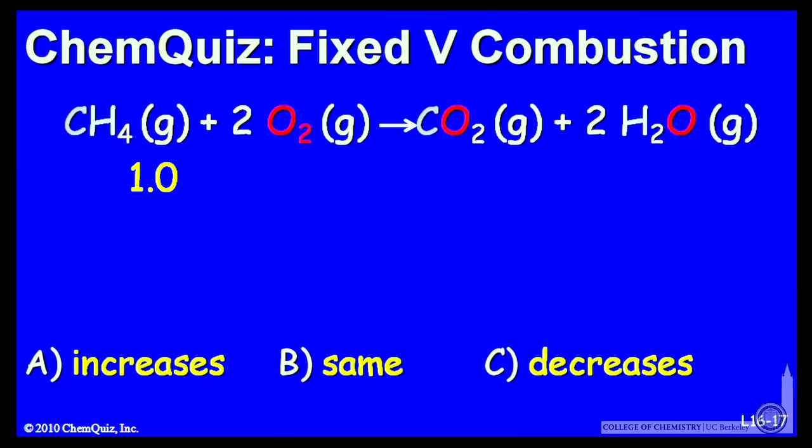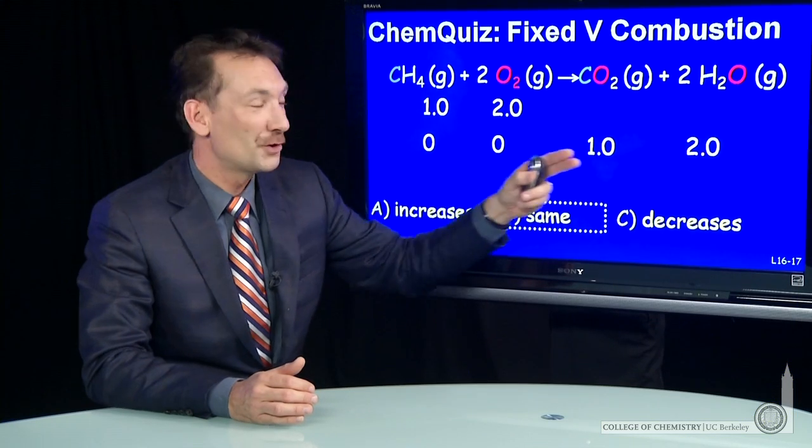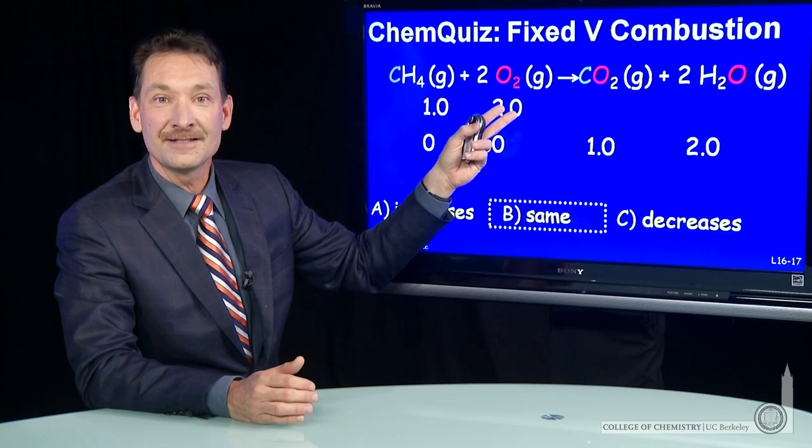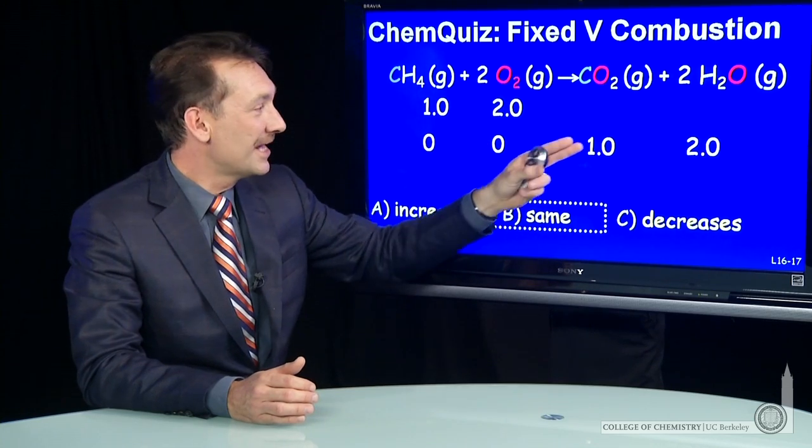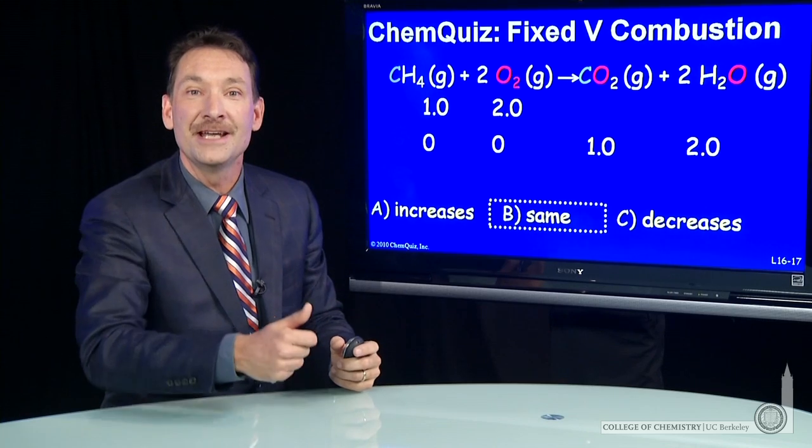So if I take a mole of methane and react it with two moles of oxygen, those are in the appropriate stoichiometric ratio. So they will produce a mole of carbon dioxide and two moles of water gas. So we'll have three moles of gas in the reagents and three moles of gas after the reaction goes to completion in the products.